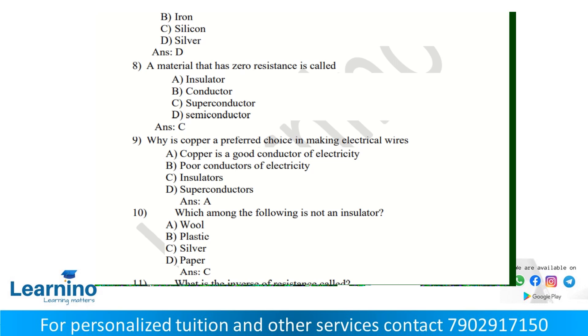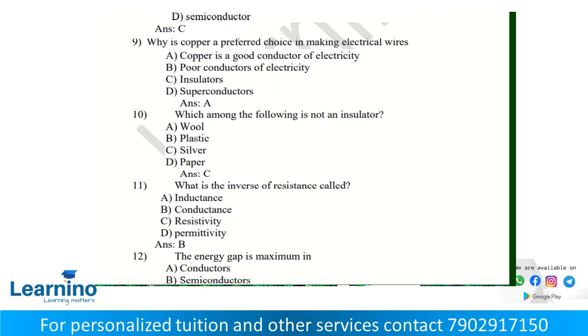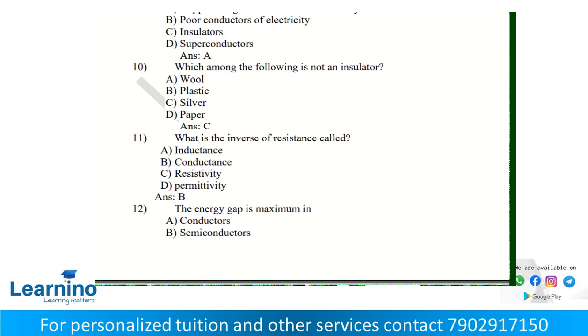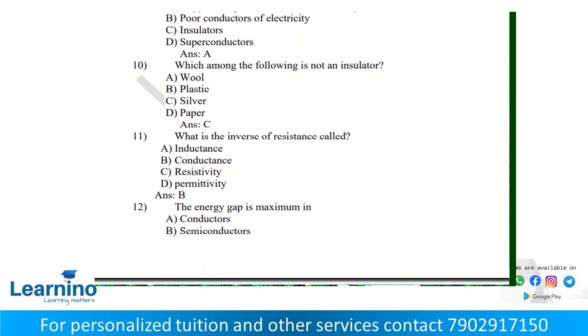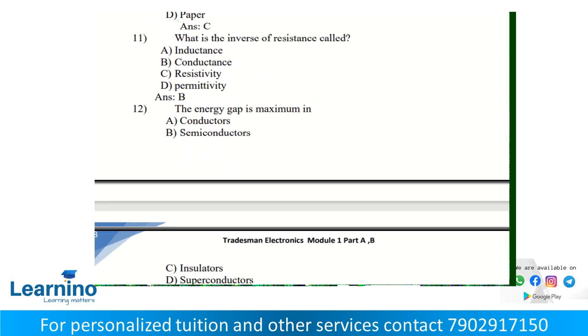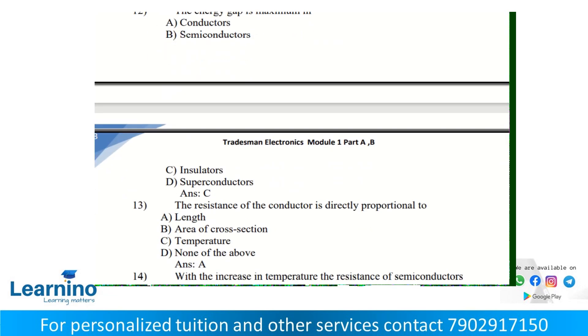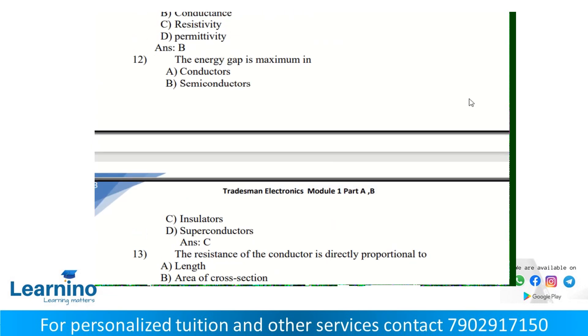Why is copper the preferred choice in making electrical wires? Copper has very low resistivity and is a very good conductor of electricity. Which among the following is not an insulator? The inverse of resistance is conductance. The energy gap is maximum in insulators, where the distance between valence band and conduction band is maximum.